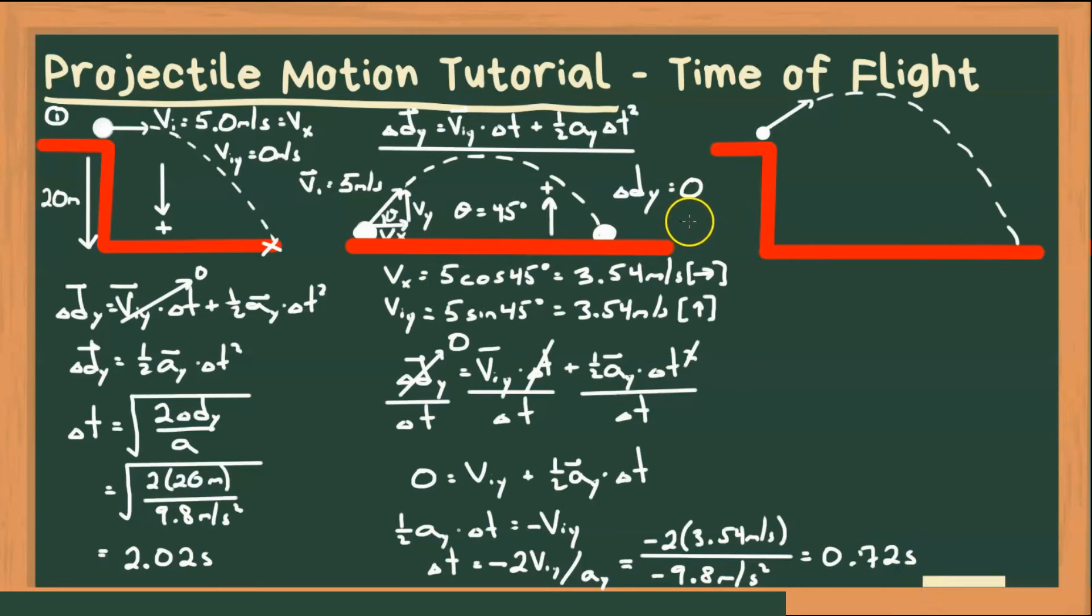All right, so the last example is going to be the trickiest. And here's why. Notice that in case 1, this term here went to 0. In case 2, this term went to 0. In case 3, not only do we have a non-zero initial velocity in y, but we also have a non-zero displacement in y. So no terms are going to be zero. And that's going to mean we will have a quadratic equation to solve, because this equation is a quadratic equation.